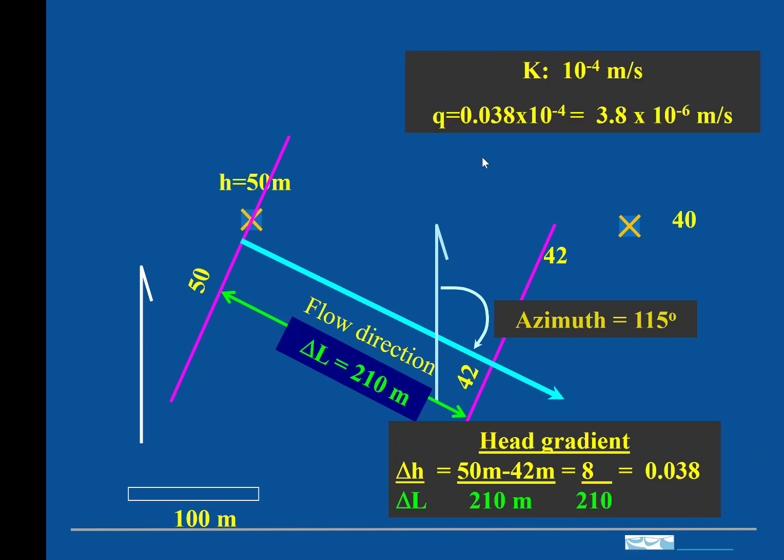Now, if we wanted to determine the flux of the groundwater, that's going to be, from Darcy's law, the product of the head gradient and the hydraulic connectivity. So if we say hydraulic connectivity is this value,